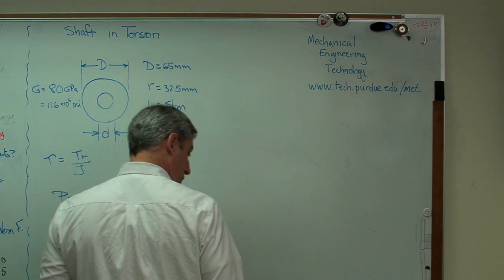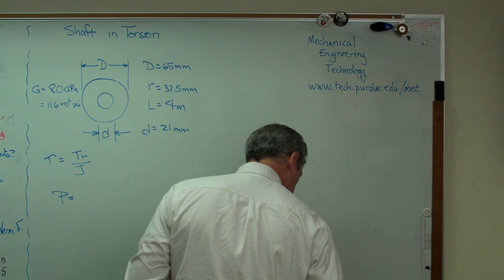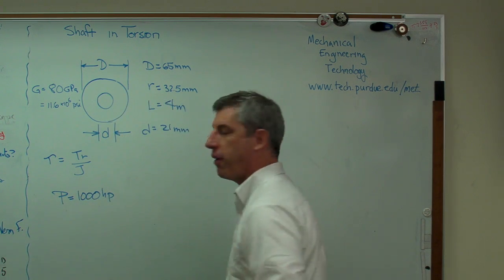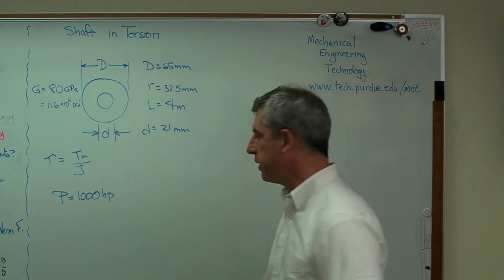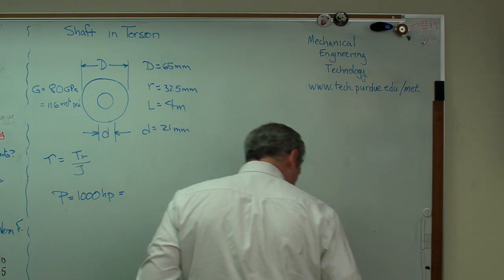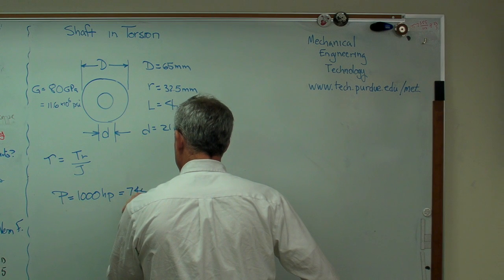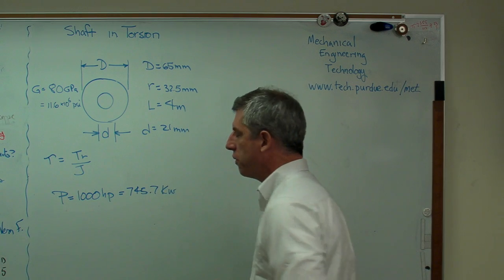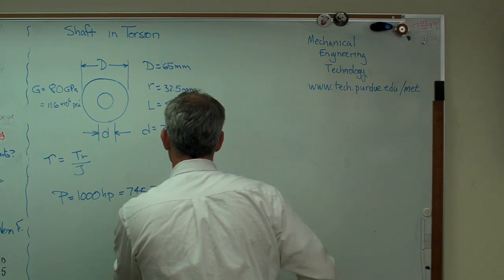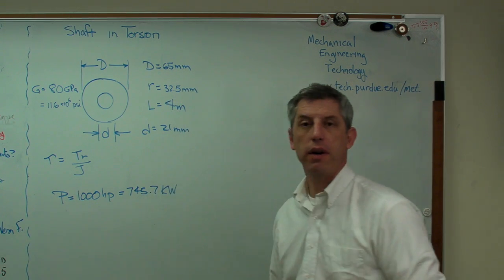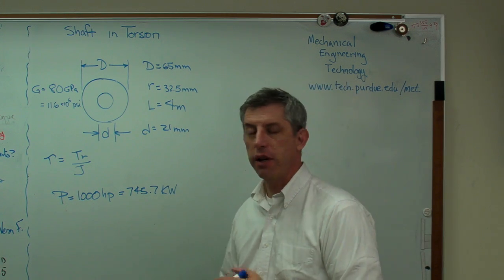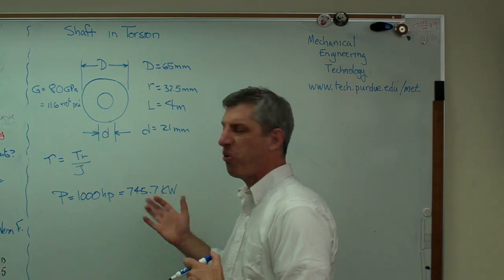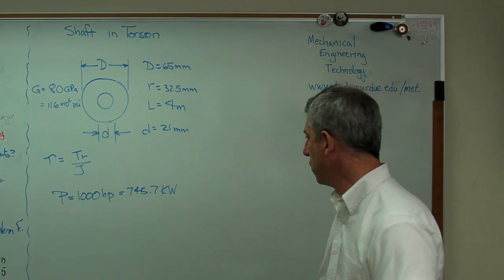So let's say the power we're trying to transmit is, I'm switching this up on you, and I apologize, 1,000 horsepower. I'm sorry, I think in terms of horsepower. I shouldn't. I was raised that way. I do. And that's 745.7 kilowatts. So if you're, that's an omega, that's a W. 745 kilowatts. So American students out there, if you're trying to relate horsepower to kilowatts, one horsepower is about three quarters of a kilowatt. That's a pretty good rule of thumb.